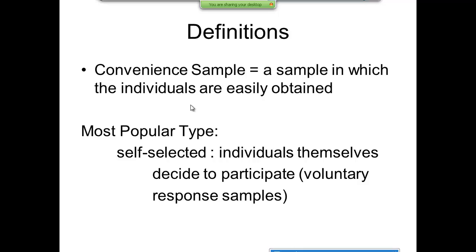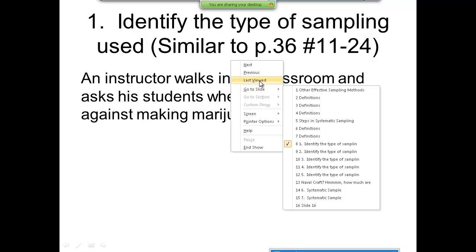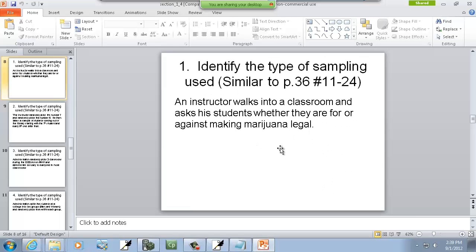Convenient sample. This is a sample in which the individuals are easily obtained. Radio programs work this way often. People call in with their opinion. Now, convenient sample isn't the best. It's easy because you get people that are very opinionated calling in one way or the other. It doesn't really represent the general population. The most popular type of convenient sample is a self-selected. Individuals themselves decide to participate. Voluntary response samples.